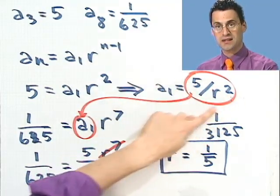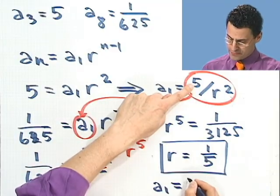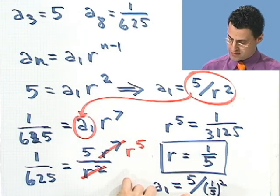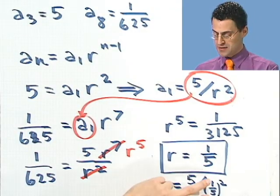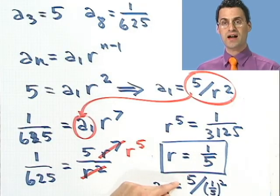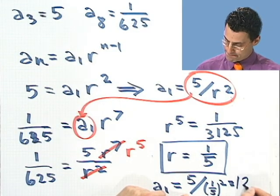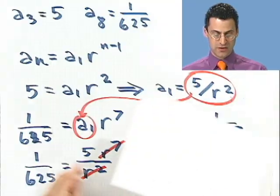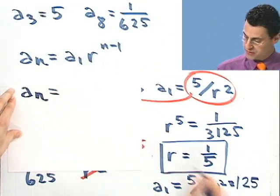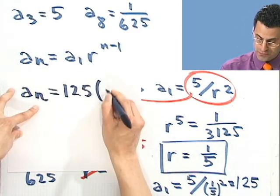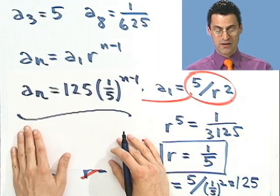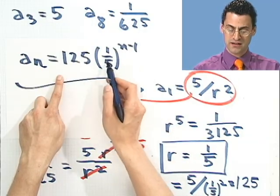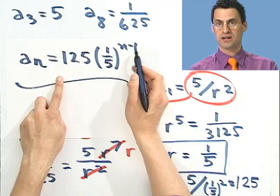What's a1? Well, I could find a1 by just plugging back into here. So a1 would equal 5 divided by r squared. So that would be 1 fifth squared. Well, 1 fifth squared is actually 1 over 25, but that's a complex fraction. So I invert and multiply. So I get the 25 on top. So I see 5 times 25, which is 125. So that's the first term. And every successive term, I take the next term and I multiply it by a fifth. Take that answer, multiply it by a fifth, and so on. So the general formula I can now report is an equals 125 times 1 fifth to the n minus 1. And that will generate now every single term in this geometric sequence.